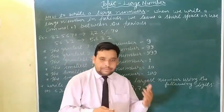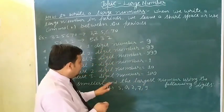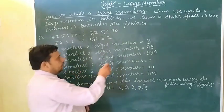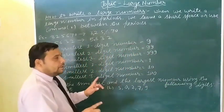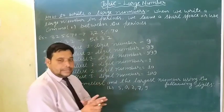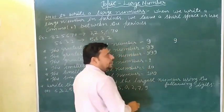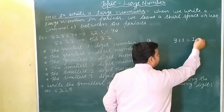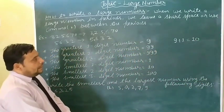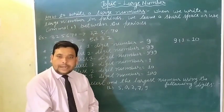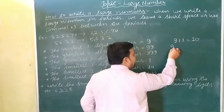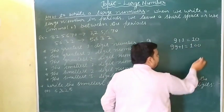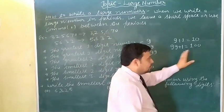The smallest four digit number is one thousand. The smallest five digit number — one zero increase karte hain. The largest one digit number is nine. Ten is the smallest two digit number. Ninety-nine, one hundred — the smallest three digit number is a hundred.